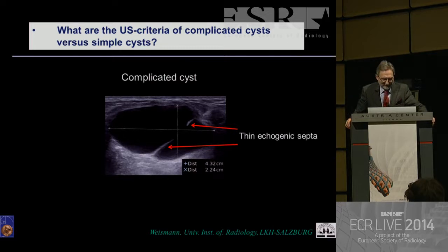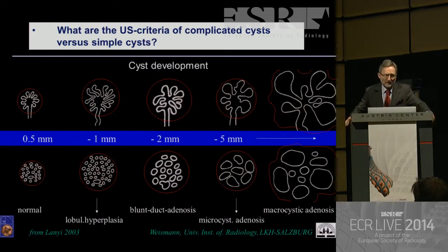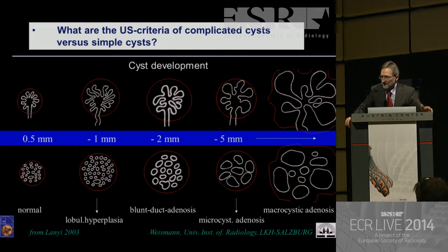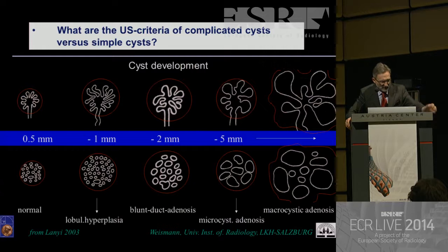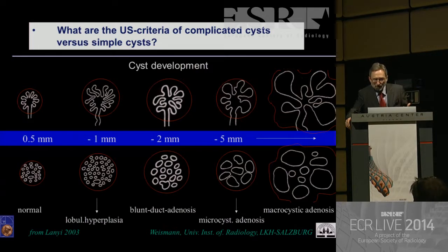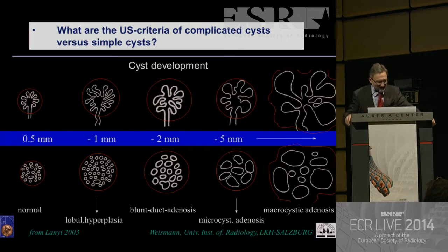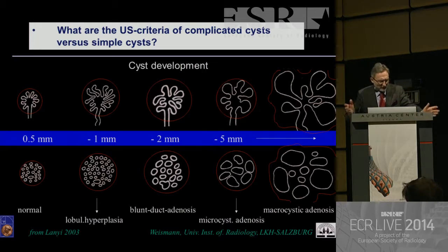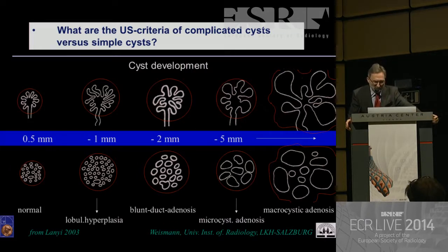The complicated cyst may show thin echogenic septa. It was very worthwhile to understand how cysts in the breast develop. First, we study the typical acini, or the tubulolobular unit — a structure of about 0.5 millimeter. It may increase; there can develop lobular hyperplasia. If secretion pressure increases, it enlarges. Blunt duct adenosis shows the acini enlarging further until the whole lobule becomes macrocystic adenosis.